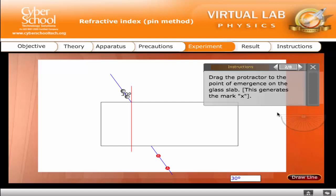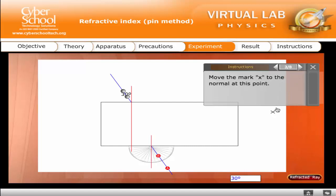Drag the protractor to the point of emergence on the glass slab. This generates the mark X.